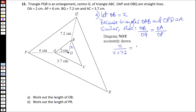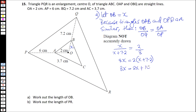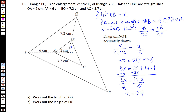Cross multiplying: 8x equals 2 multiplied by (x plus 7.2), so 8x equals 2x plus 14.4. Subtracting 2x gives 6x equals 14.4. Dividing both sides by 6 gives x equals 2.4. So OB equals 2.4 and part a is done.